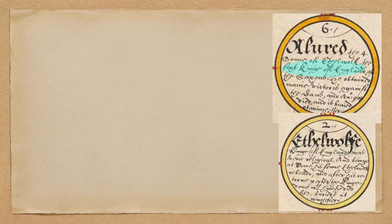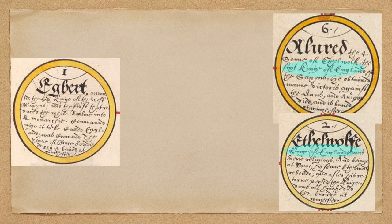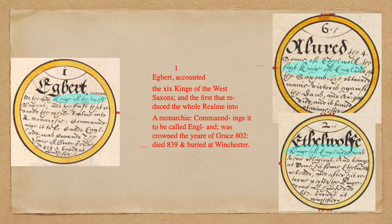The comma implies that Alfred is the sixth king of England, not Aethelwulf. Looking at Aethelwulf's description, he is the second king of England. But the person listed first is Egbert — the king of the West Saxons — and his description says he is the first that reduced the whole realm into a monarchy and commanded it to be called England, crowned in the year 802. So Egbert becomes the first king of England, the father of England, gathering all territories and naming it.